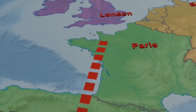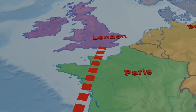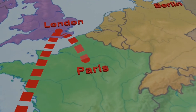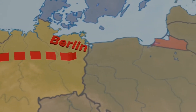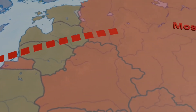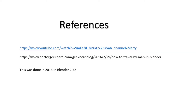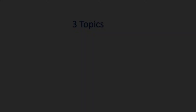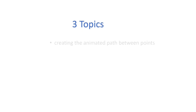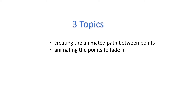Here is an animated path between points on a map done in Blender. This was inspired by a tutorial done a few years back with an older version of Blender, so this one is a little more updated. It's divided into three main topics — there are many steps, but these are the three main ones.